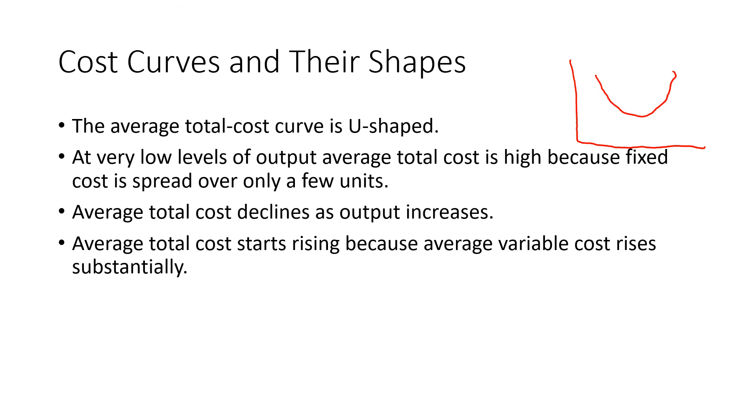At very low levels of output, average total cost is high because fixed cost is spread over only a few units. As output increases, ATC declines. Then it starts rising again because average variable cost rises substantially. In the next lecture we will summarize these discussions, study costs in more detail, and introduce the long-run and short-run concepts. Thank you for watching.